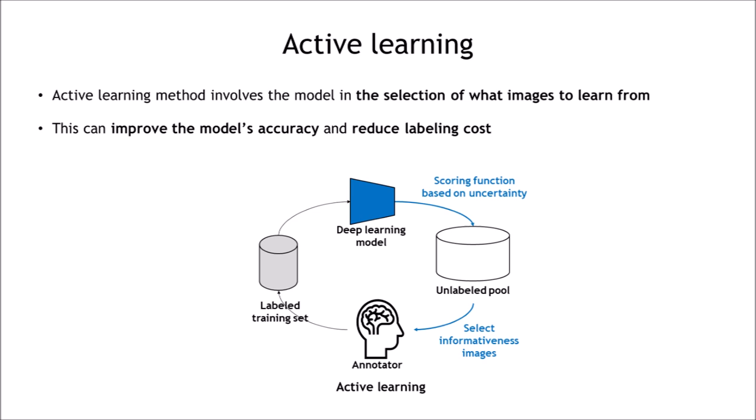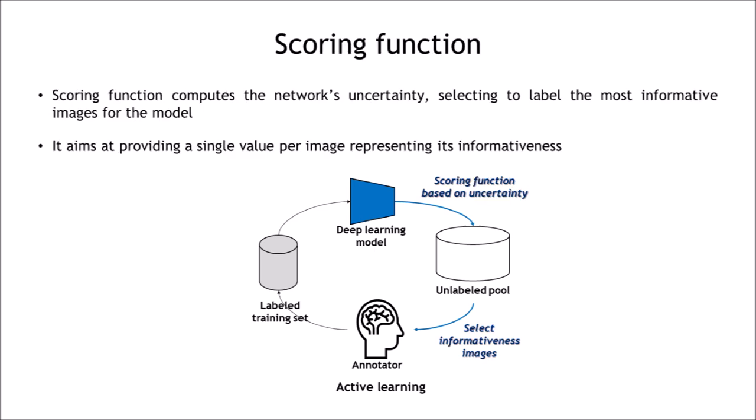Active learning method involves the deep learning model in the selection of what images to learn from. This can boost the accuracy of the model and reduce the labeling cost. A key component of active learning is the scoring function. It computes the network's uncertainty, selecting to label the most informative images for the model, and it aims at providing a single value per image representing its informativeness.